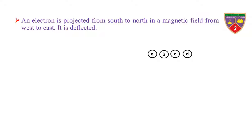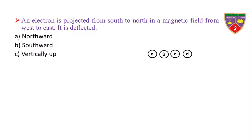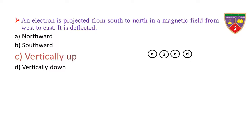An electron is projected from south to north in a magnetic field from west to east. It is deflected: Option A: northward. Option B: southward. Option C: vertically up. Option D: vertically down. The key is vertically up. Therefore, the correct option is C.